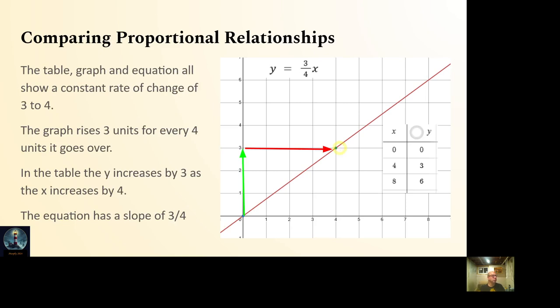So when we're comparing our proportional relationships, the table, graph, and the equation all show the same constant rate, or they'll have a different constant rate, but in this case, they'll have the same constant rate of 3 over 4, or 3 to 4. The graph rises 3 units for every 4 units it goes over. And in the table, the y increases by 3 as the x increases by 4. And in the equation, it has a slope of 3 over 4. And when we're comparing proportional relationships, basically the only thing that defines a proportional relationship is that constant of proportionality, which when we graph it, we call the slope.